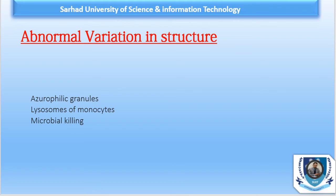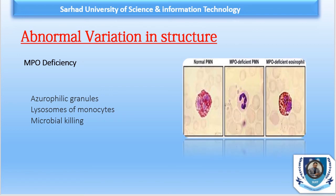Another abnormal variation is myeloperoxidase deficiency. Myeloperoxidase is a human enzyme in the azurophilic granules, also present in the specific vesicles of neutrophils and in the lysosomes of monocytes. Its major function is microbial killing. In an autosomal recessive inherited condition, myeloperoxidase is absent. This deficiency can be detected using certain stains such as histochemistry or cytochemical stains, and also by flow cytometry.